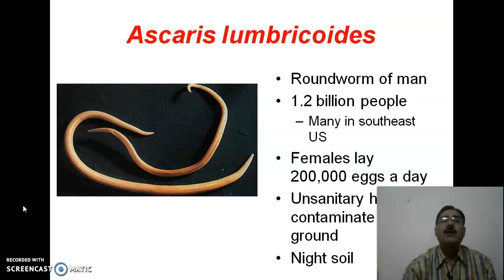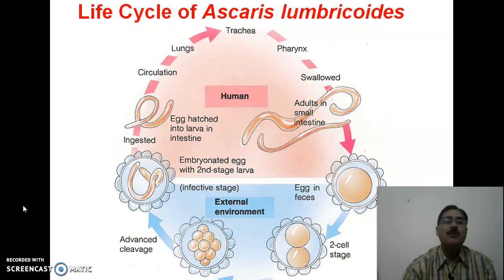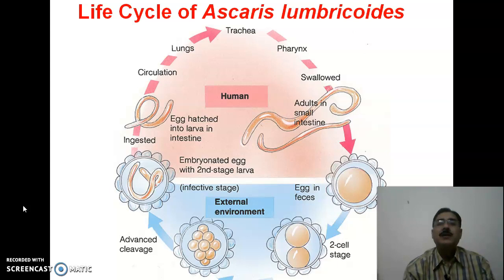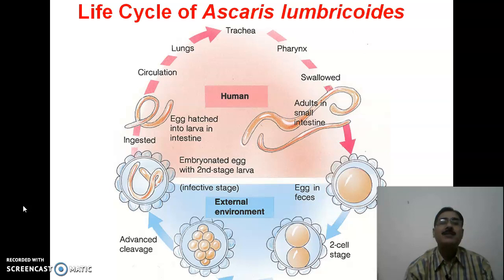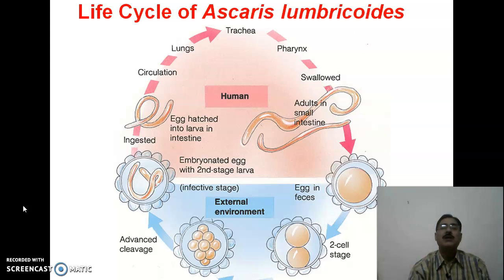Now let us take the common example — Ascaris lumbricoides, the roundworm of human beings. Nearly 1.2 billion people are affected by this. The female lays approximately 200,000 eggs a day and unsanitary habits contaminate the soil. The larva is ingested, goes to the circulatory system, then from the lungs to the trachea, there is regurgitation, and ultimately from the pharynx it is swallowed back to the small intestine.